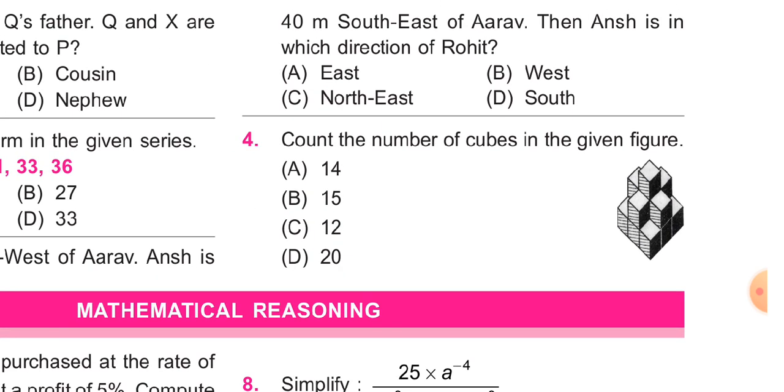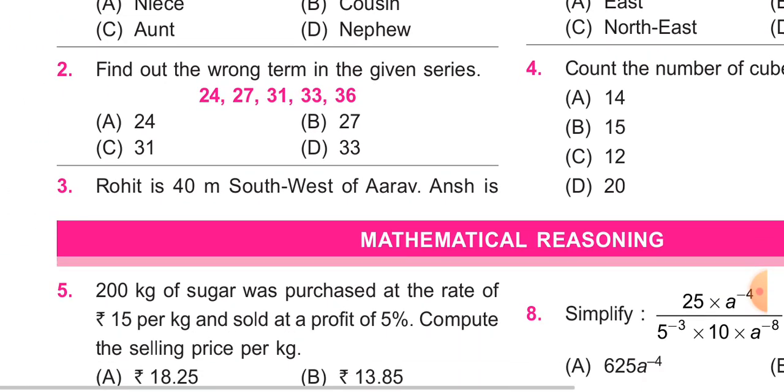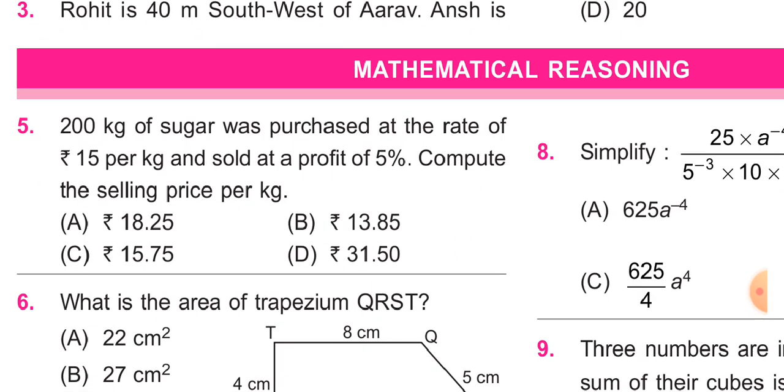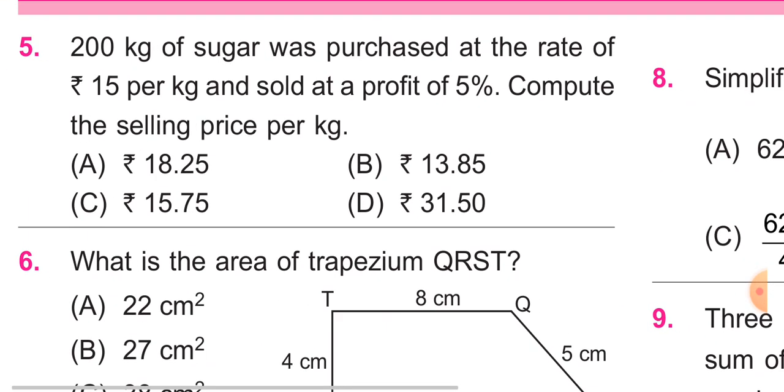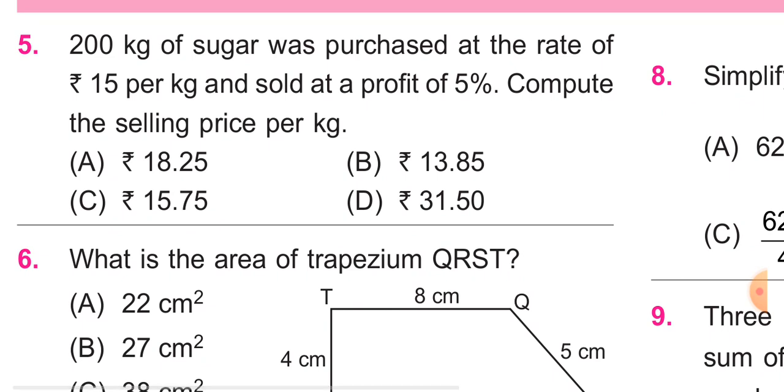Next section is mathematical reasoning. The first question is: 200 kg of sugar was purchased at the rate of rupees 15 per kilogram and sold at a profit of 5%. Compute the selling price per kilogram. Total cost is 15 into 200 that is 3,000.